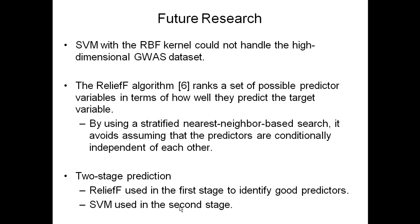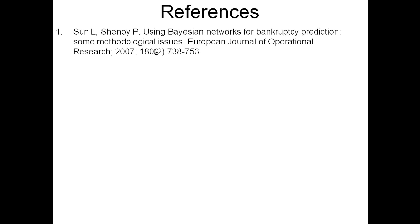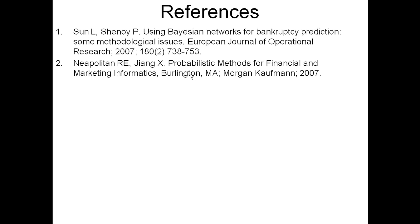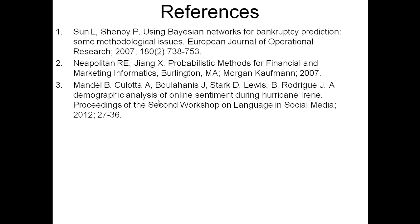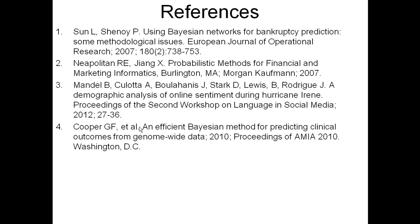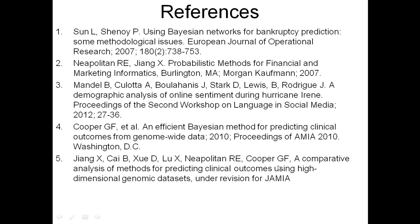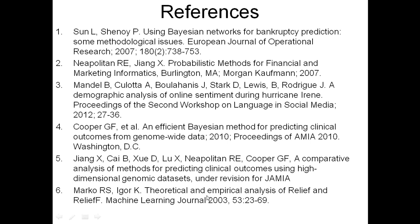In closing, the point I've tried to make by showing the results of this paper is that there's no simple answer to a best prediction algorithm. It's good to know them all, and when you're attacking a problem, investigate which one is going to be best. The references include: Sun and Chenoy who developed the bankruptcy prediction program; a paper on a problem where naive Bayes did very poorly; Cooper's paper introducing EBMC; the comparative analysis paper under revision for JAMIA; and a paper describing RELIEFF.